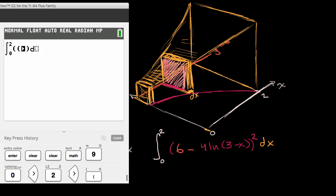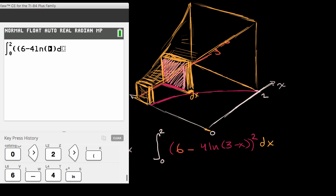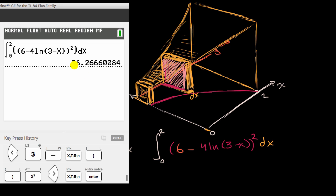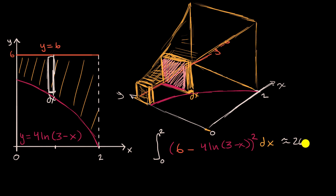And then we just have to input everything. We're going from zero till two of, and then we have, let me open parentheses, because I'm gonna have to square everything, six minus four times the natural log of, or actually the natural log of three minus x. And so let me close the parentheses on the natural log part. And then if I close the parentheses on this whole thing, I want to then square it, and then I'm integrating with respect to x, enter, I got approximately 26.27. So approximately 26.27, and this is a volume here, so if we thought about units, it would be in our units cubed, or cubic units.